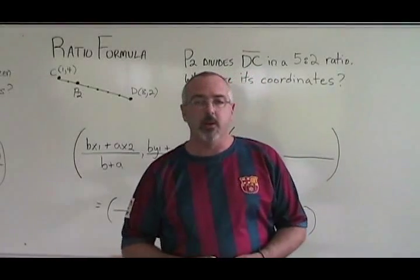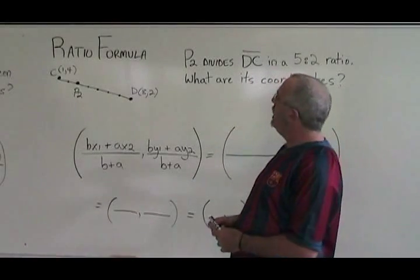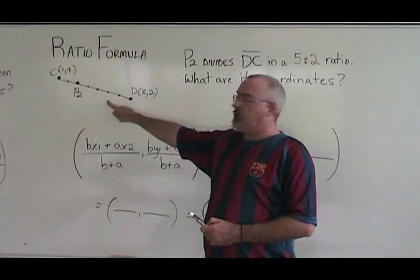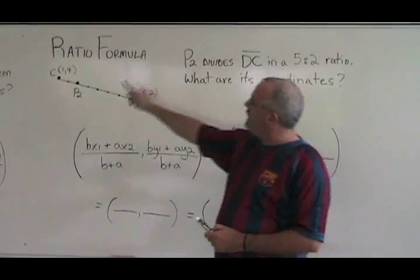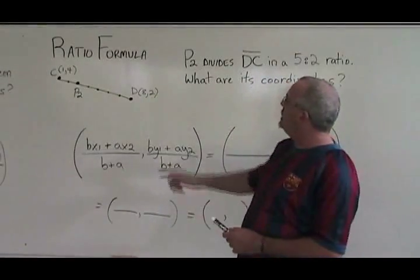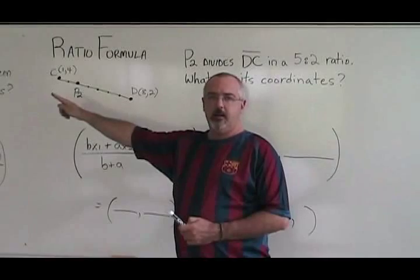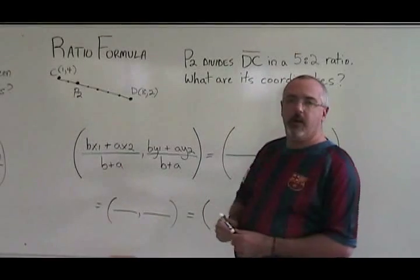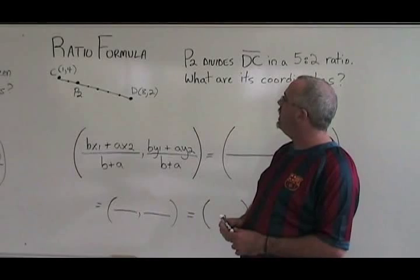In example two of using the ratio formula, we have this situation pictured here. Point P2 divides segment DC in a ratio of five to two. What are the coordinates of point P2?